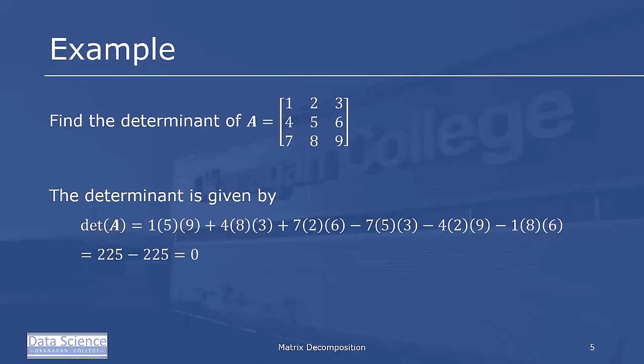Another example: find the determinant of A = [[1,2,3],[4,5,6],[7,8,9]]. Following Sarrus' rule, we compute the six product terms, and we get 0. This is a quick way to determine that this matrix doesn't have an inverse because the determinant is 0.